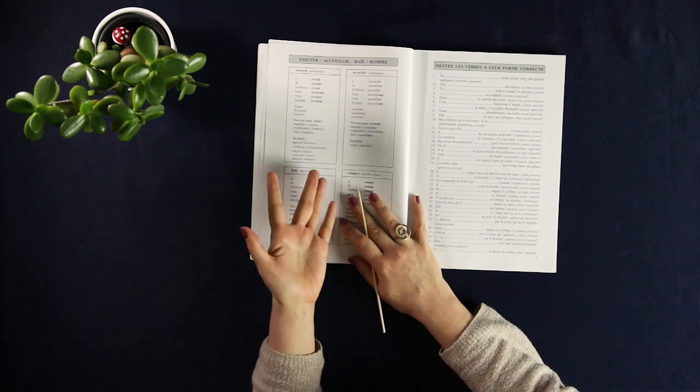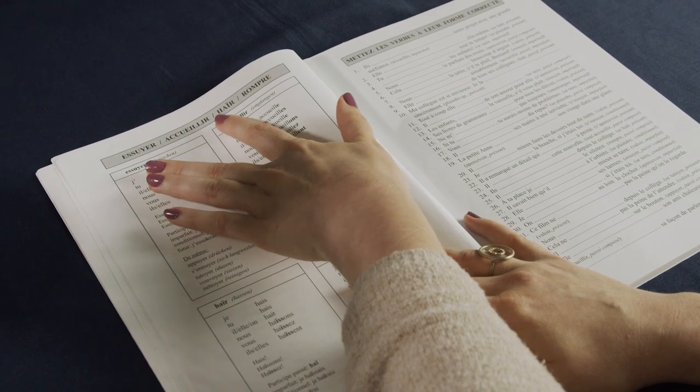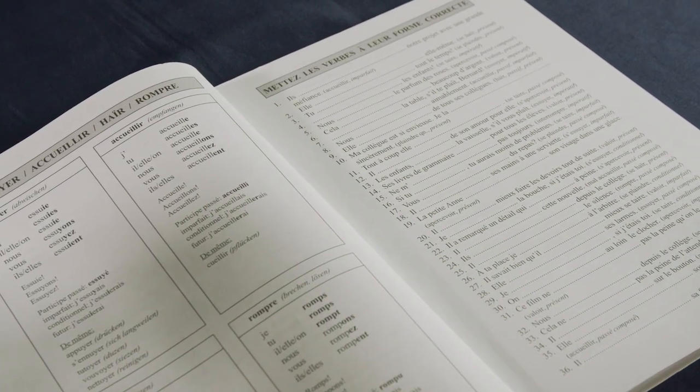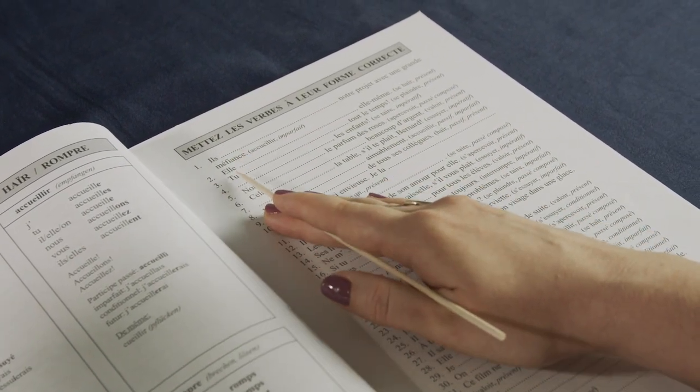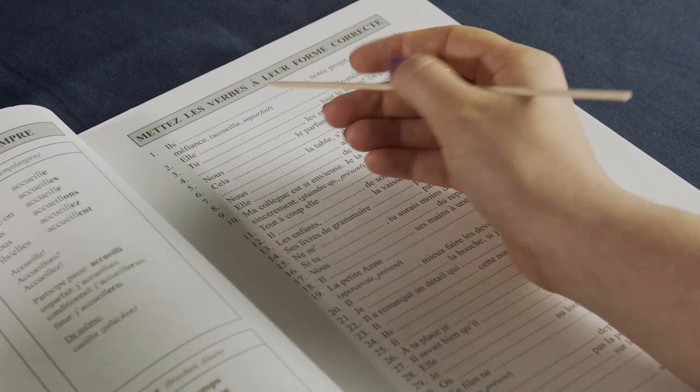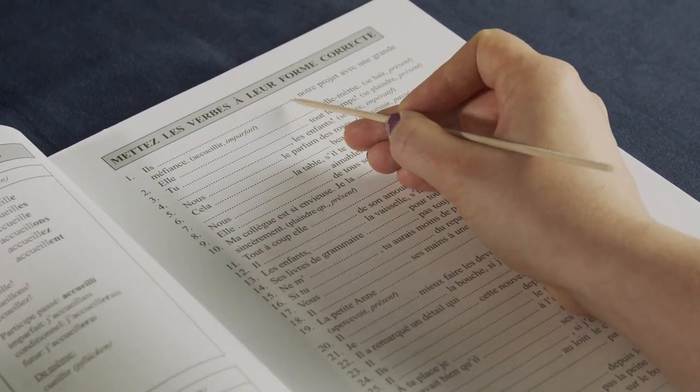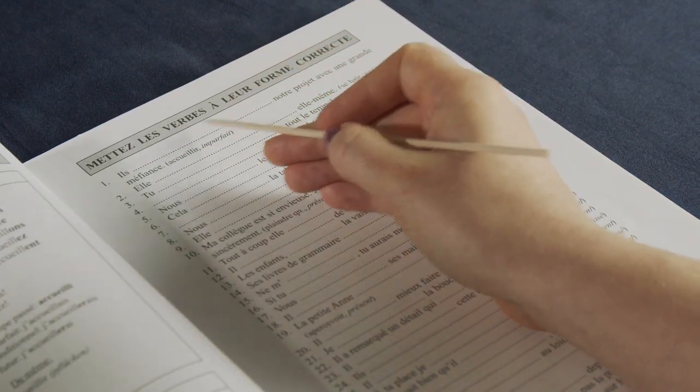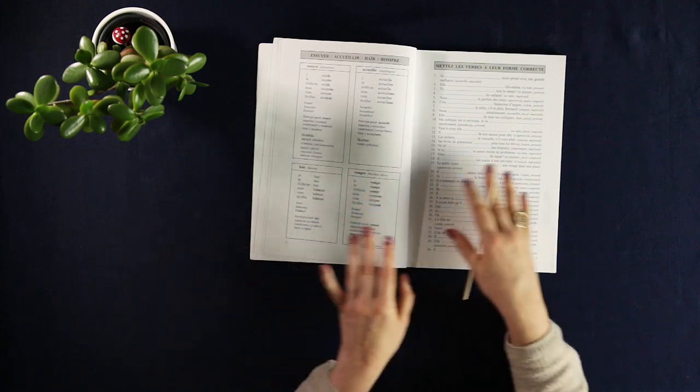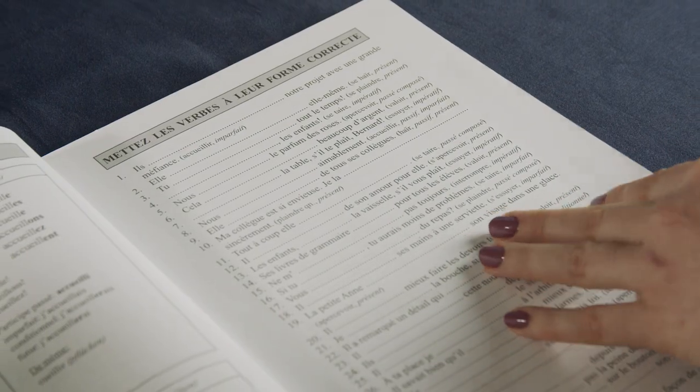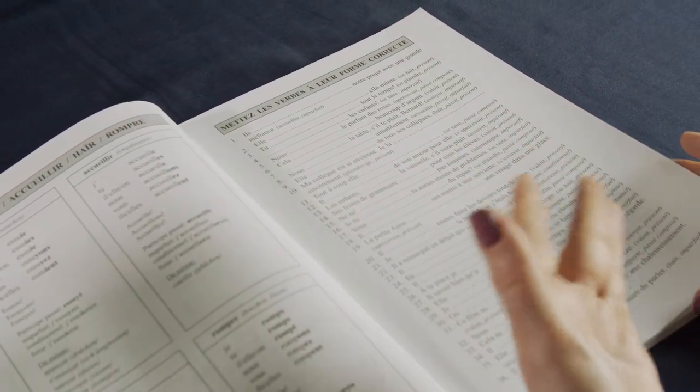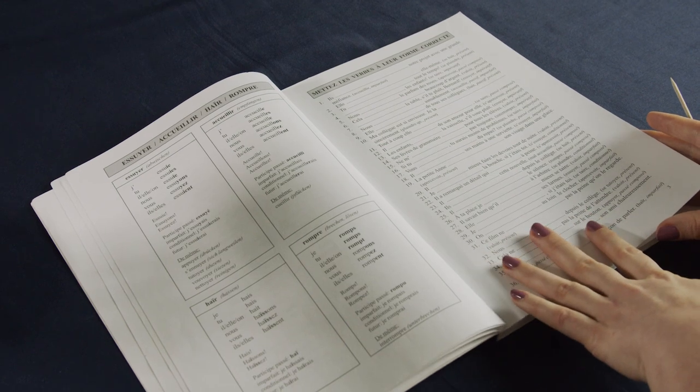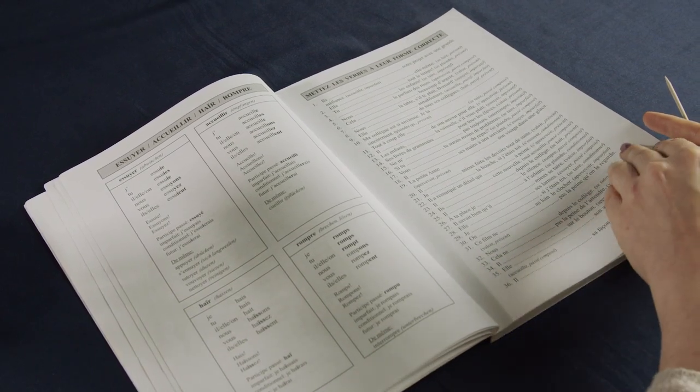There's another page with more of these irregular verbs: essayer, accueillir, haïr and rompre. And then you just have a page of exercises. So it's just one sentence per number, and you have to fill in the missing form. In this case here, it tells you both the verb and the tense, so you just have to fill this in correctly. And if you need to, you can look it up here on the other side. So this is quite easy. And I think it's a great way to just go through these verbs that might be a bit difficult and do some quick exercises on a lot of them. And for me, this has always been something that helped me just get the forms stuck in my head and make it easier to remember them.